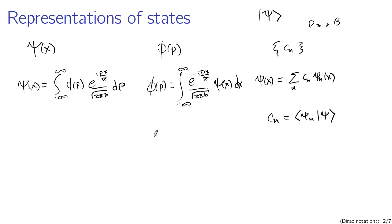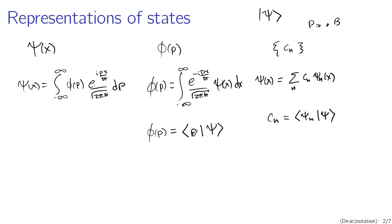Likewise, you can think of phi of p in the same way. Phi of p can be written as the inner product of p and that arbitrary wave function. This p represents a wave function or a state of a quantum mechanical system with known momentum p — essentially an eigenstate of the momentum operator with eigenvalue p. So I'm using p, the eigenvalue, to index the eigenstate with that appropriate eigenvalue.